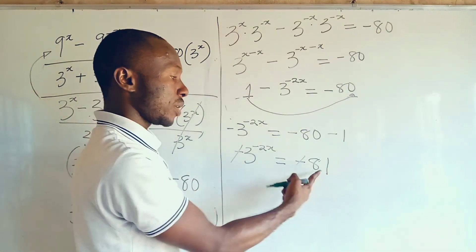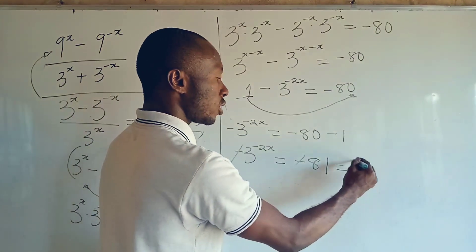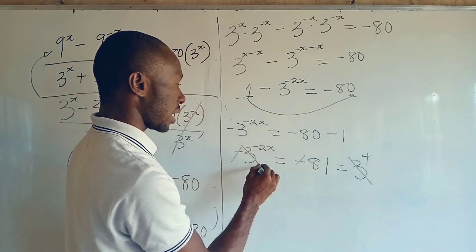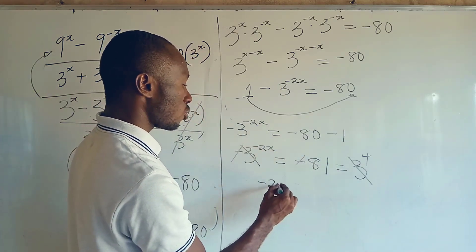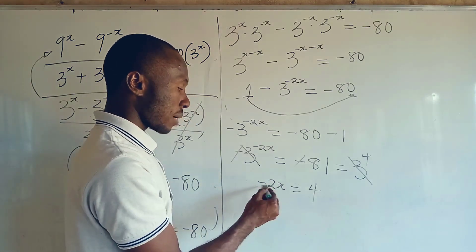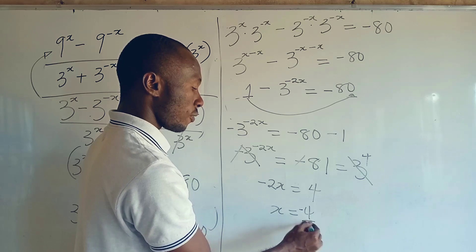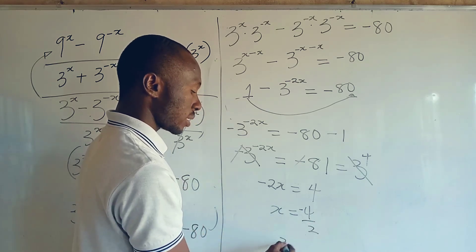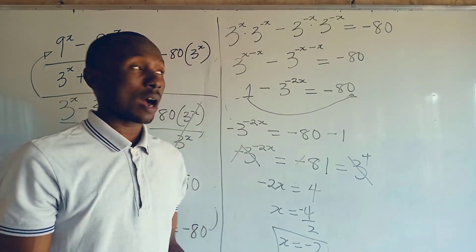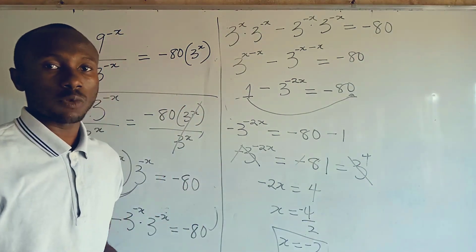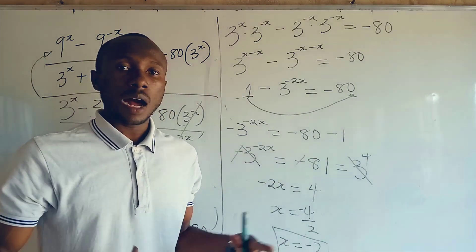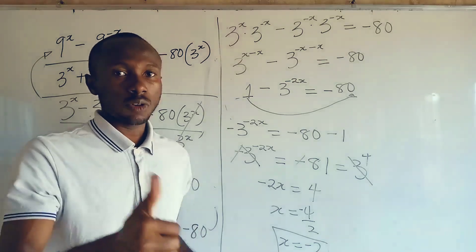The negatives cancel, and I can write 81 as 3 to the power of 4. So 3 to the power of minus 2x equals 3 to the power of 4, which gives minus 2x equals 4. Dividing both sides by minus 2, x equals minus 2. So x equals minus 2 is the value we found in this exponential equation. I hope this video helped — please subscribe and join us in our next tutorial. God bless.